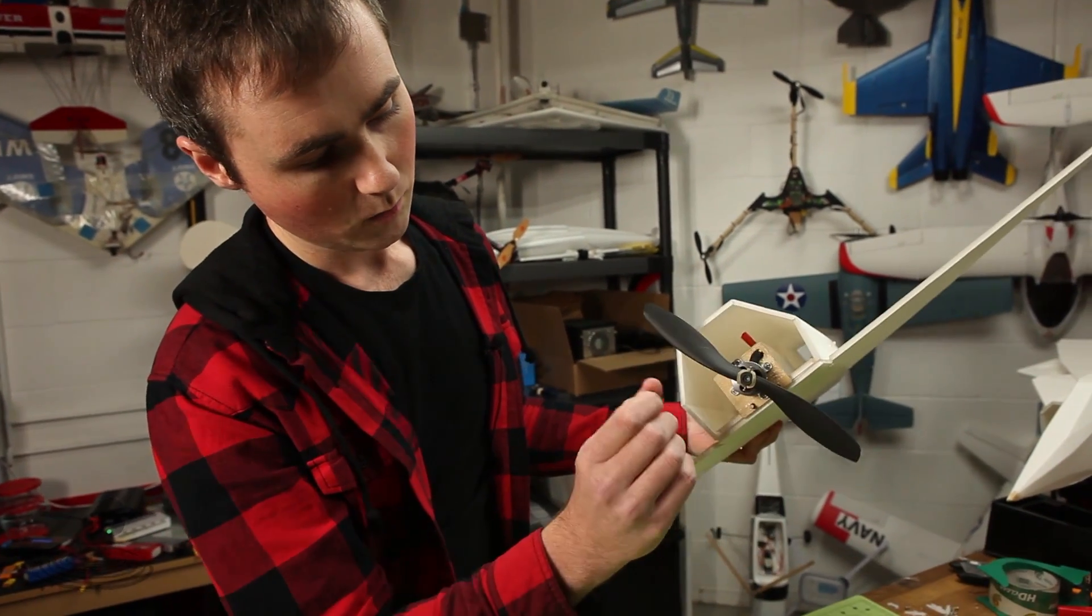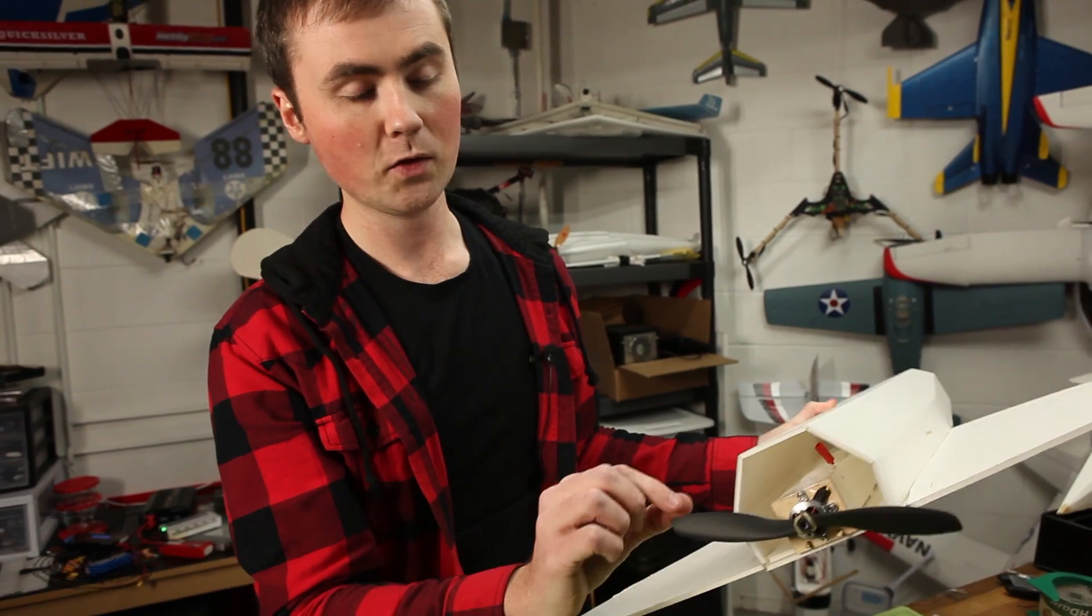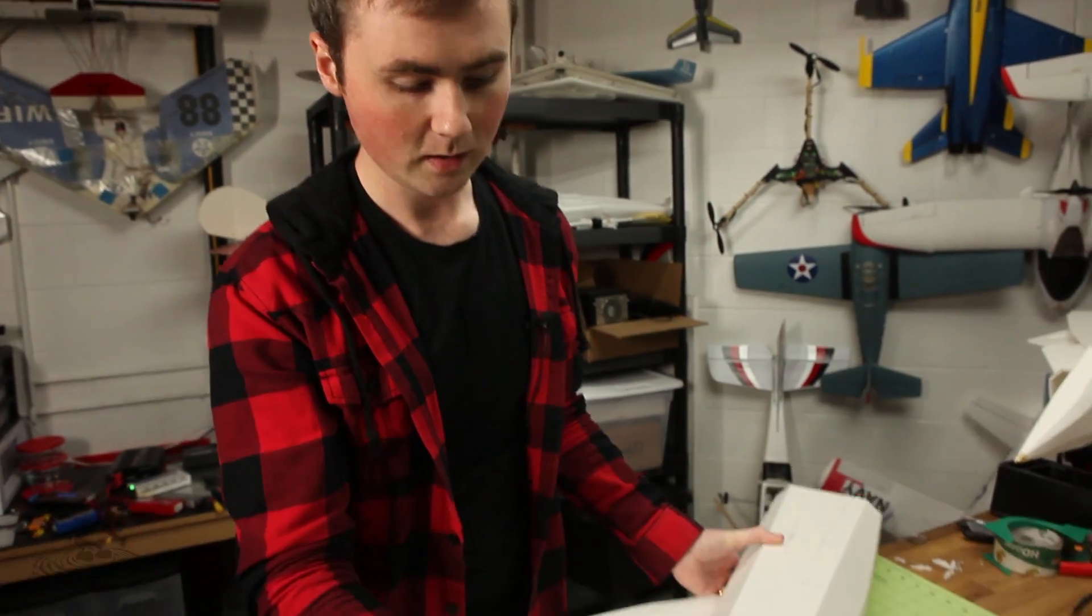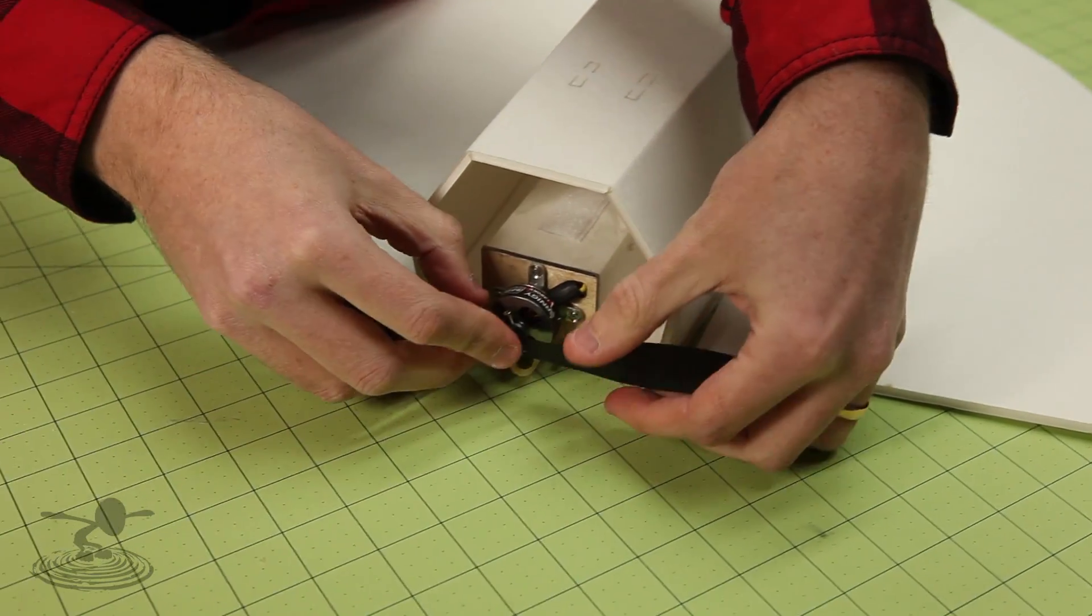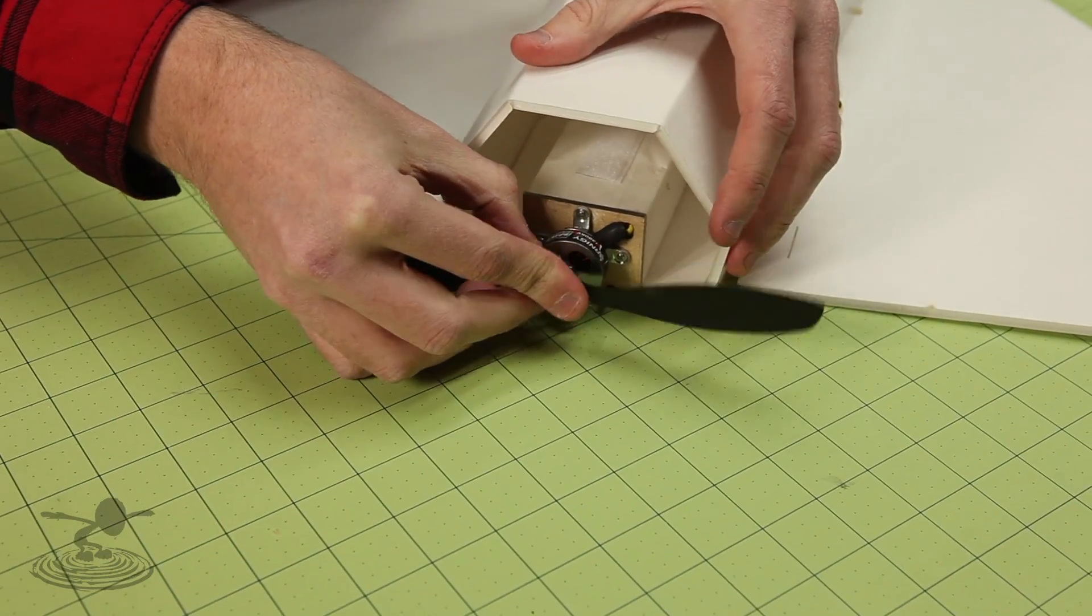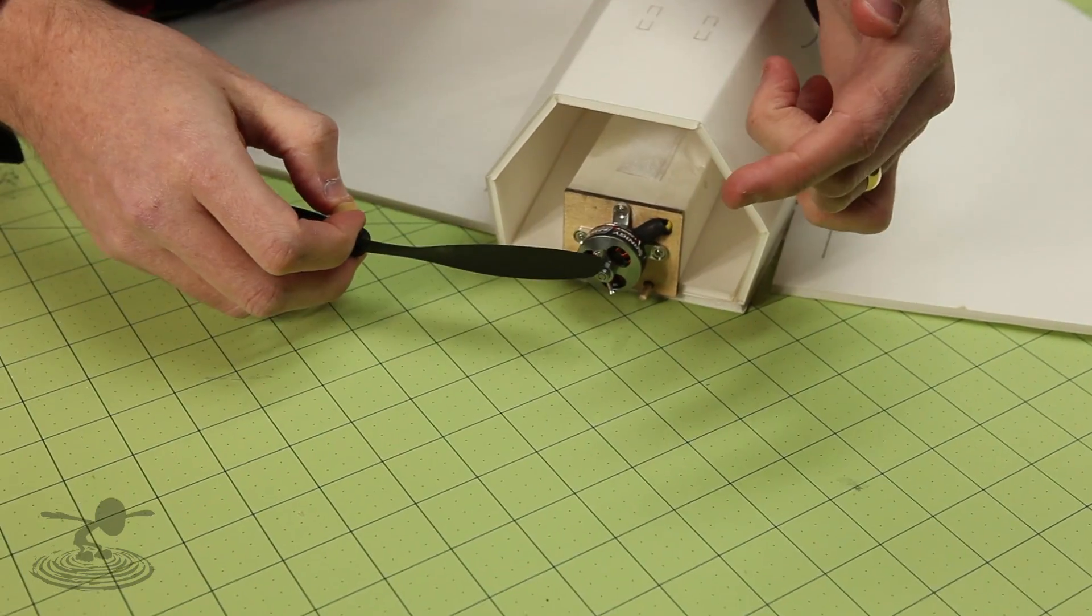Remember, whenever you put the power pod on in this direction, you have to flip the prop around. So take the prop off, flip it around. Otherwise it's going to push the opposite direction. So put it on that way. Just put it on. Then you have to reverse two of the motor wires. Now that's the power pod version done.